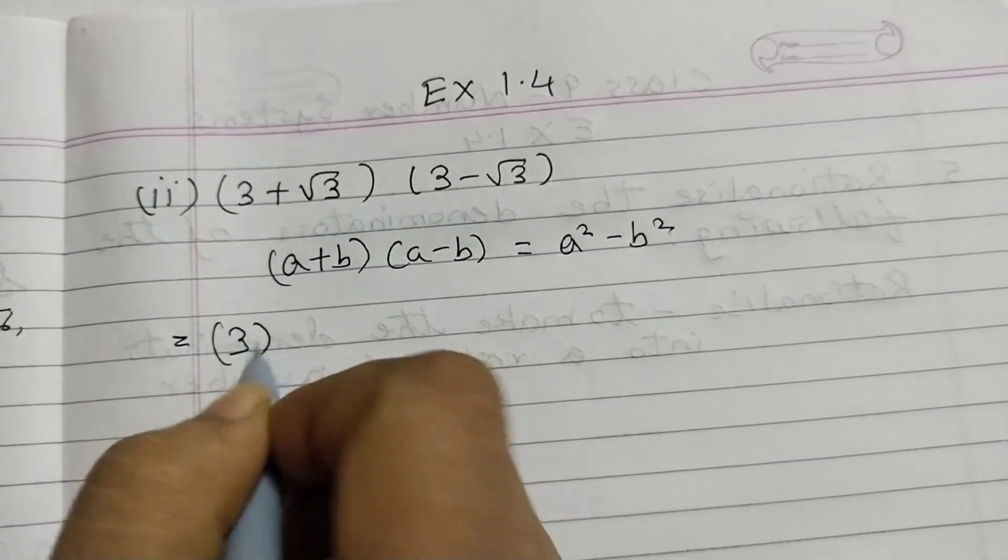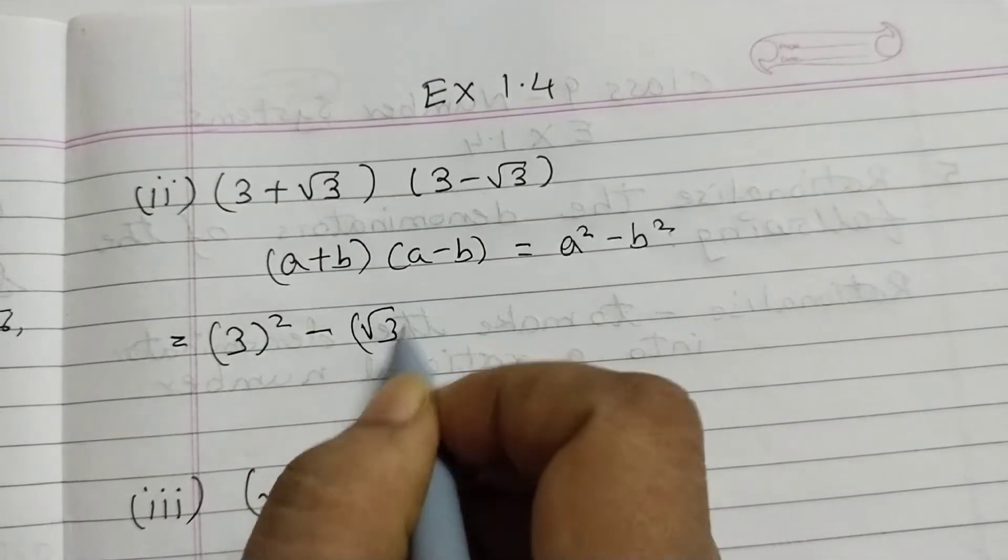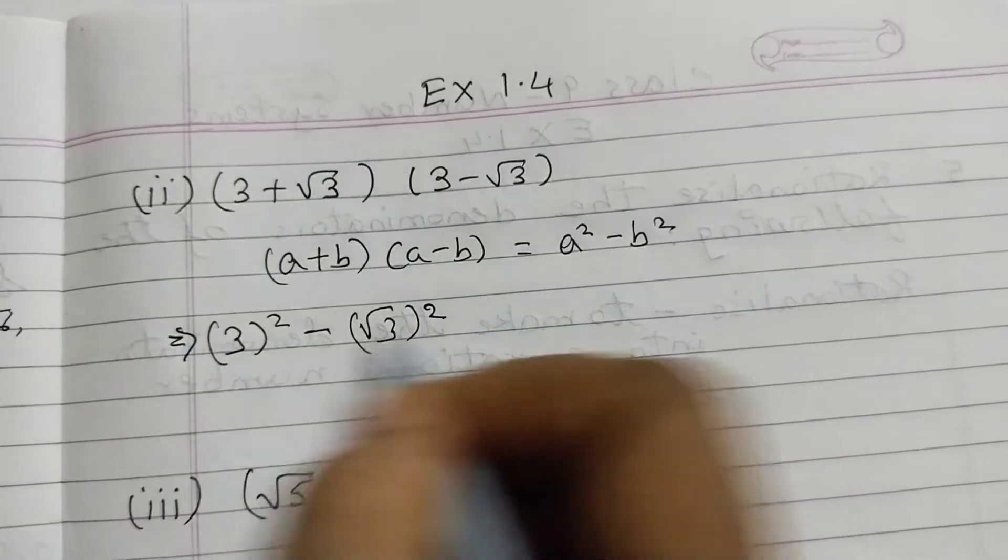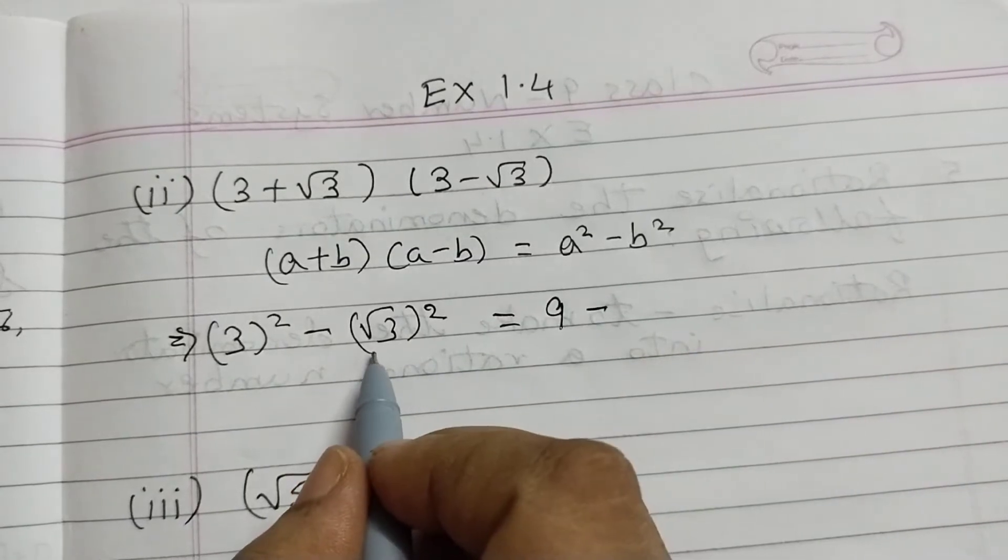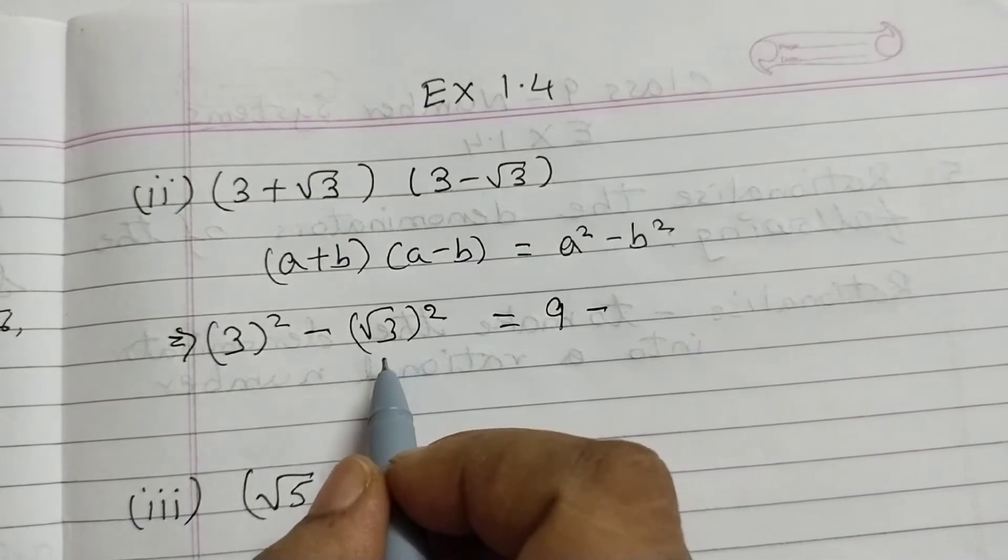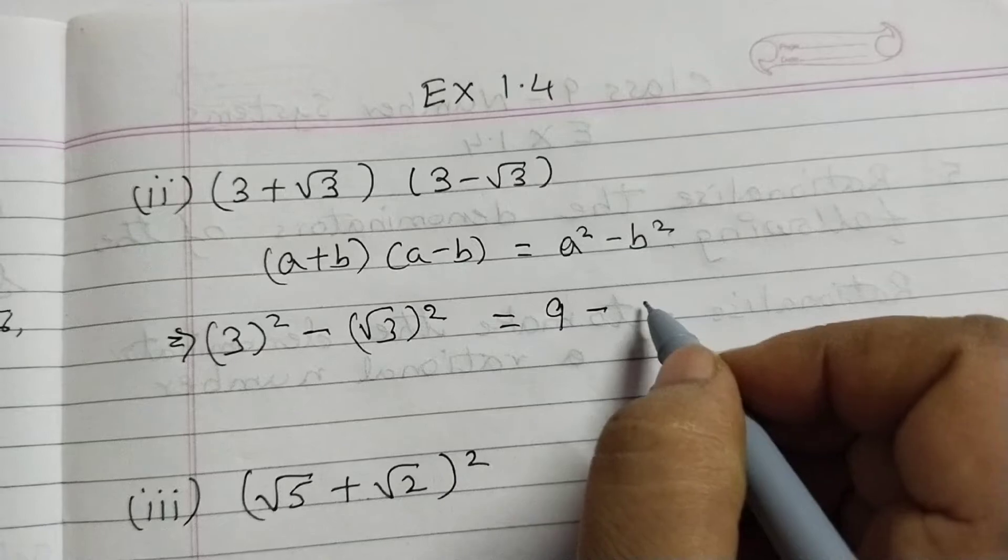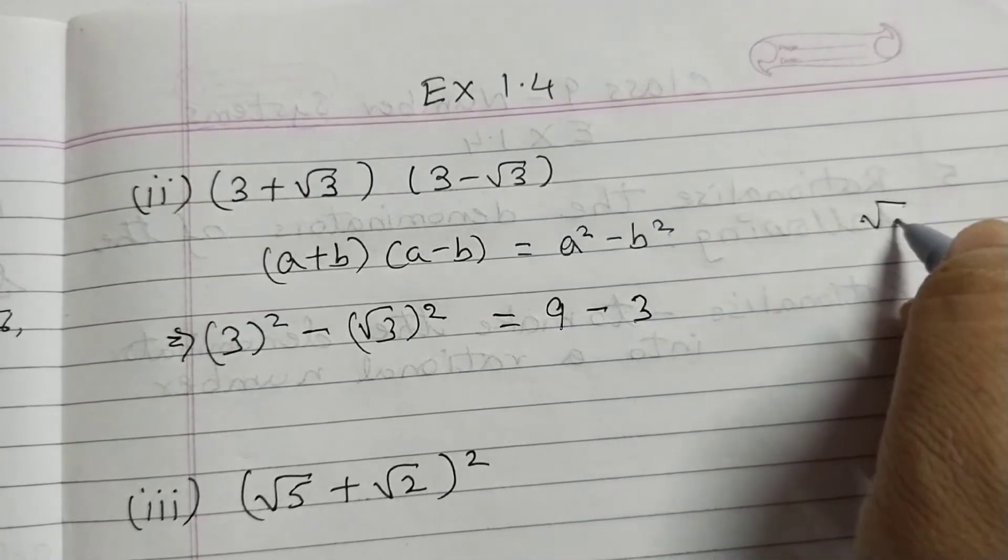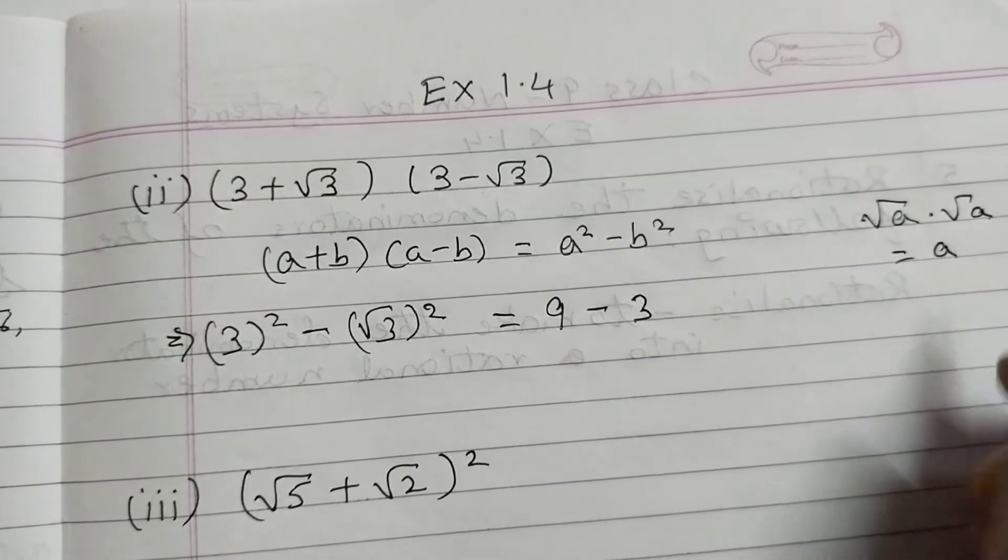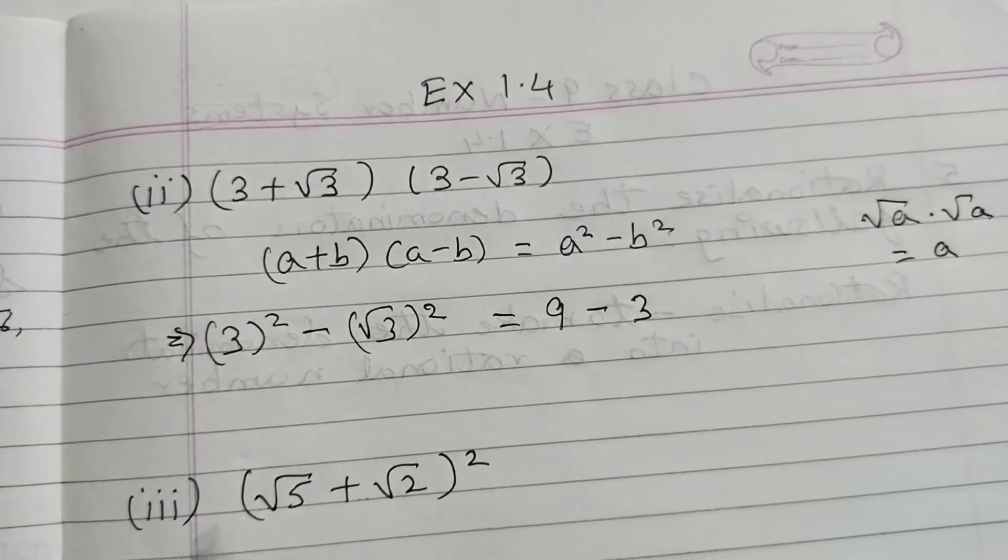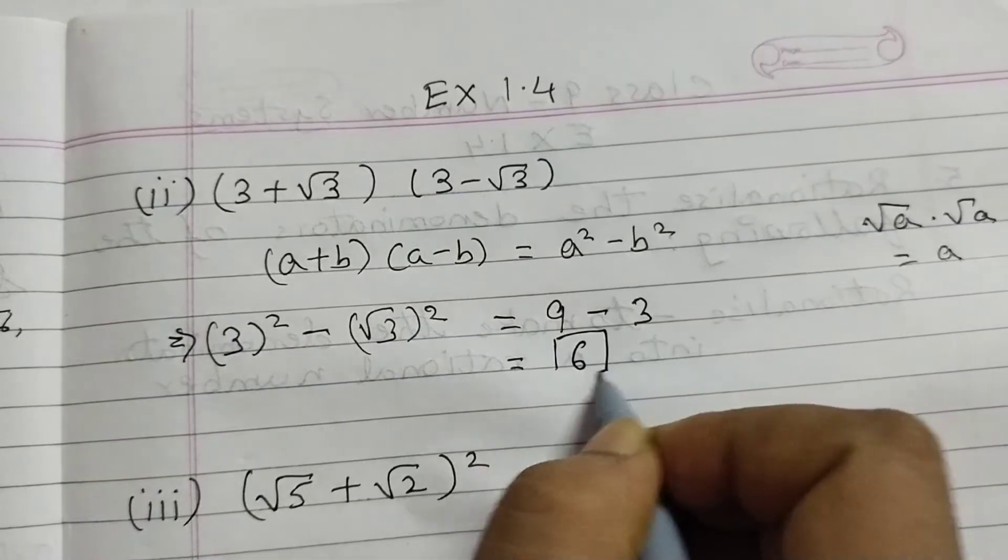Using this identity we can solve this. Here a is 3, so 3 squared minus b is root 3, root 3 squared. That would be equal to 3 into 3 is 9 minus square root of 3 times square root of 3. Whenever we are multiplying the same number and that's in root, this becomes a whole number. So this will become 3, that means if you do square root of a multiplied by square root of a, this would be a and a can be any number. So 9 minus 3 equals 6. So the final answer is 6.